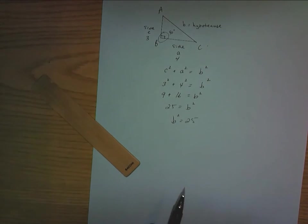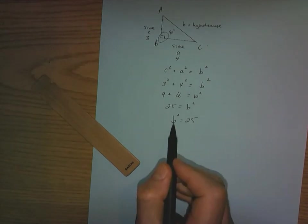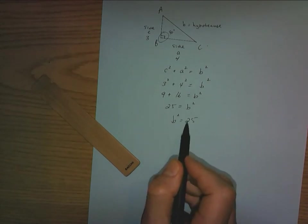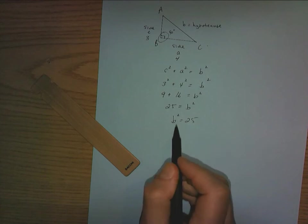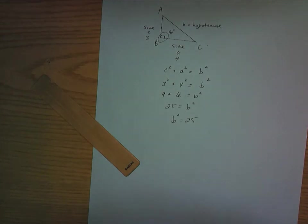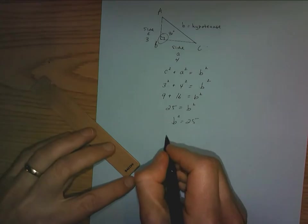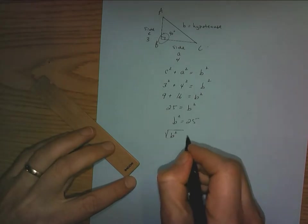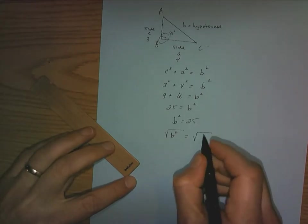What this is saying is what is the number that squared gives us 25? So what is the number of b that if I square it will give us 25? Alright, so we square root both sides because square rooting is the opposite of squaring.